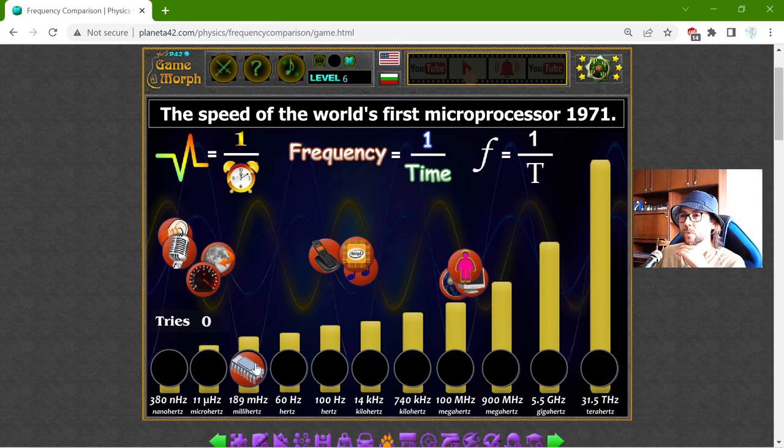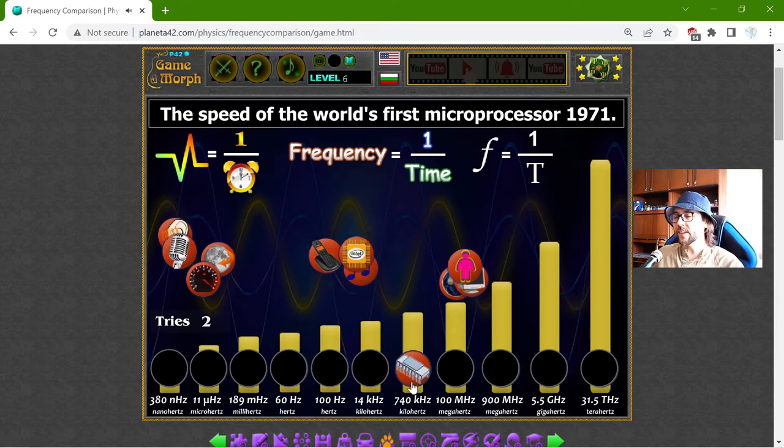Okay, this is too little. Aha, looky. So the first microprocessor frequency is 740 kHz.